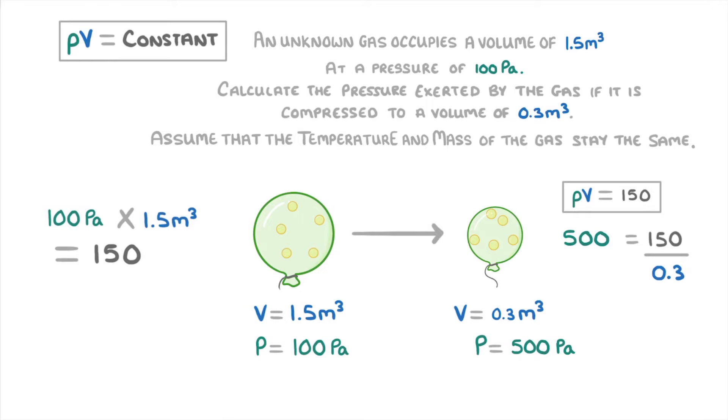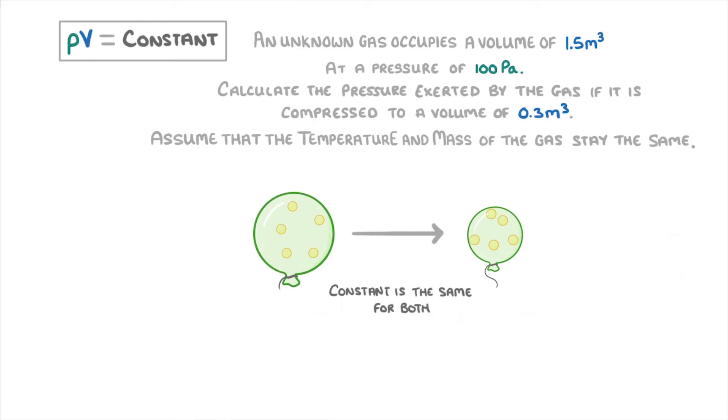Now there is another way of doing this that some people prefer. Because the constant is the same for both containers, instead of actually figuring out the constant, we can just say that the pressure times the volume in the first container equals the pressure times the volume in the second container. And to avoid getting the numbers confused, we normally say that P1 times V1 equals P2 times V2.